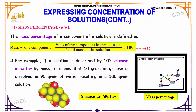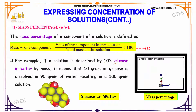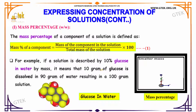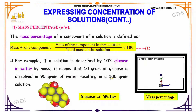For example, if a solution is described as 10% glucose in water by mass, it means that 10 grams of glucose is dissolved in 90 grams of water, resulting in a 100 gram solution.